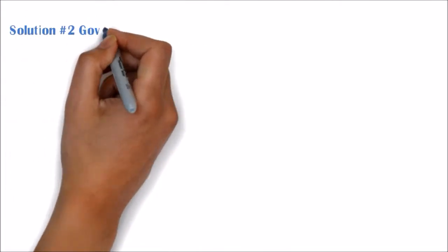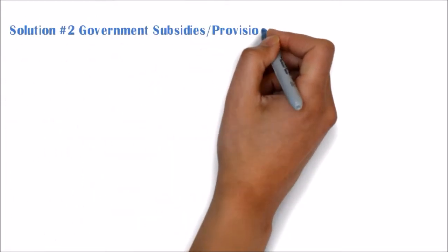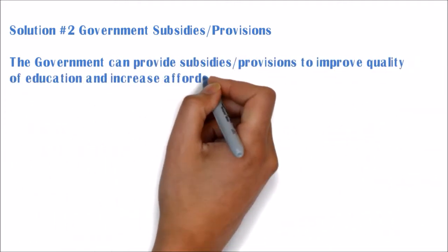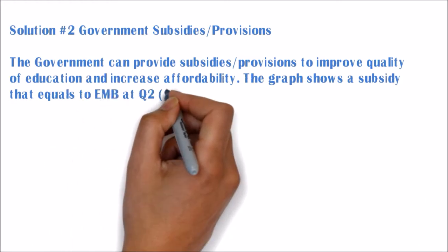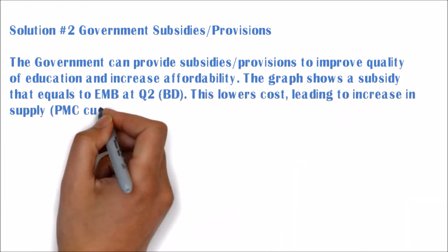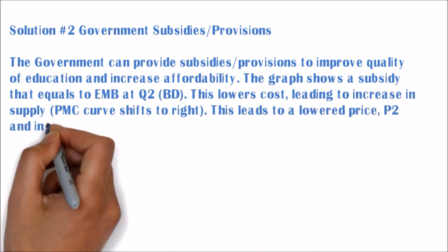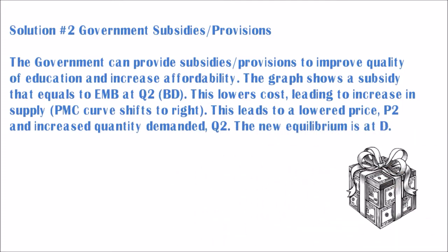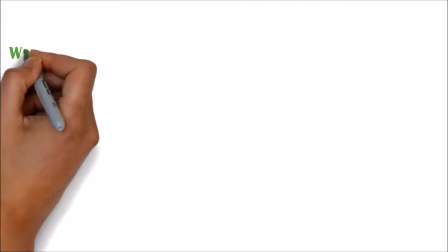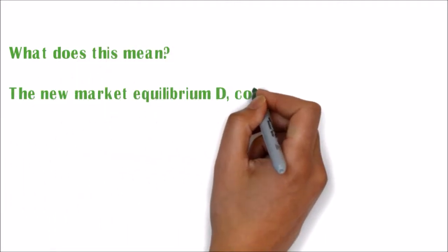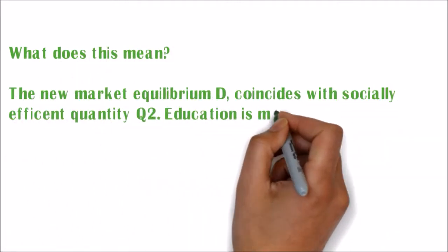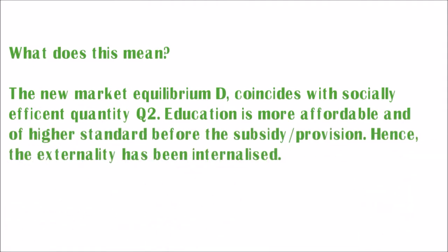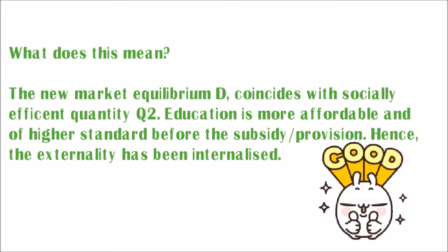Solution two: government subsidies or provisions. The government can provide subsidies or provisions to improve quality of education and increase affordability. The graph shows a subsidy that equals EMB at Q2. This lowers cost, leading to an increase in supply. This leads to a lowered price, P2, and increased quantity demanded at Q2. New equilibrium is at B. The new market equilibrium D coincides with the socially efficient quantity Q2. Education is now more affordable and of higher standard than before the subsidy or provision. Hence, the externality has been internalised.